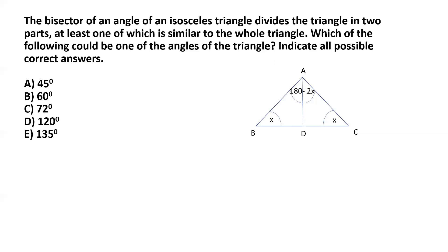This basically divides the isosceles triangle into two triangles. It's well known that the bisector of the unequal angle of an isosceles triangle divides it into two congruent triangles, because AD is essentially the median. However, the special case here is that those two smaller triangles are similar to the bigger triangle, and what similarity means is that the angles of the triangles should be the same.